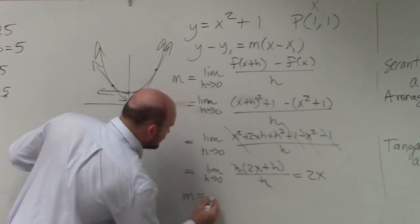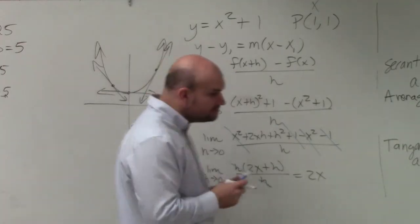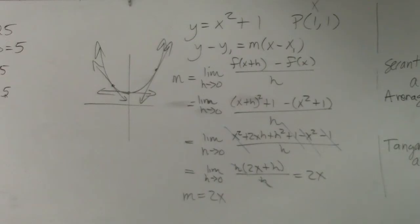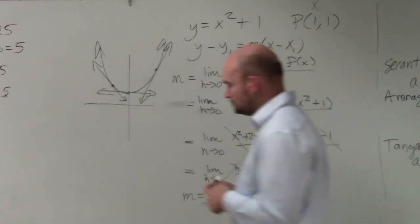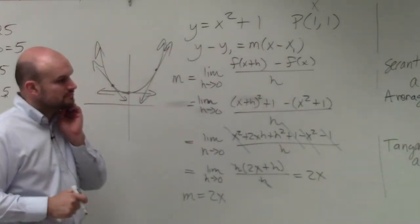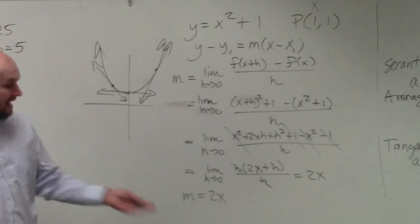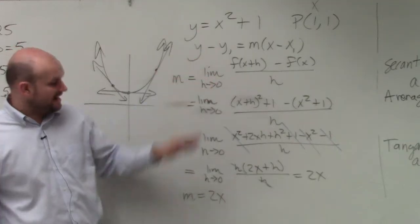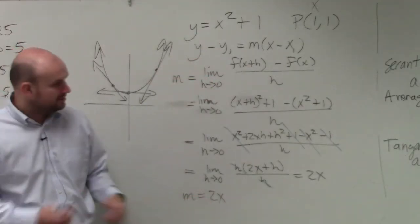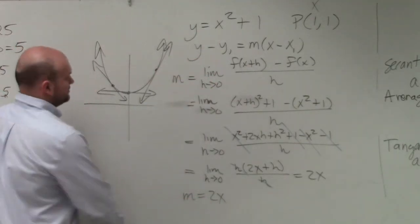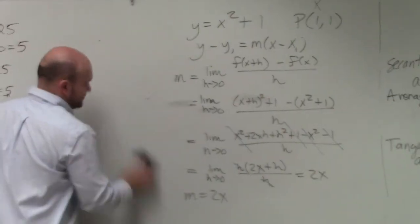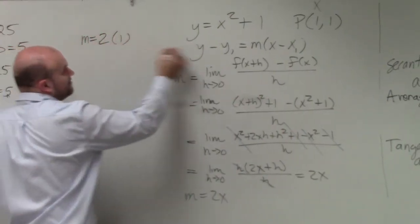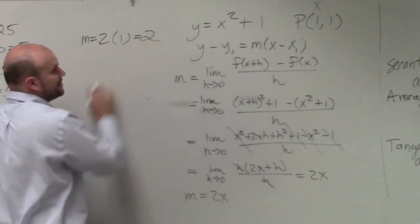So therefore, the equation of my tangent line is m equals 2x. Now x represents any given point. So to find the slope of the line, all I need to do is plug in 1. So to find my slope, m is equal to 2 times 1, because that's my x coordinate, which gives me 2.